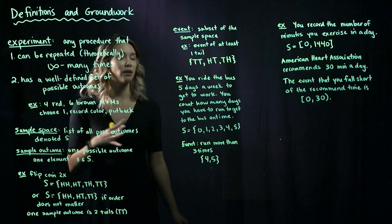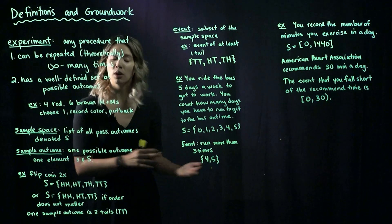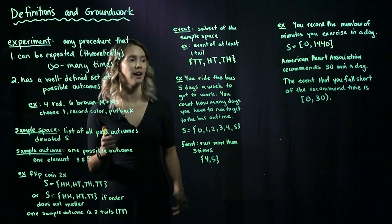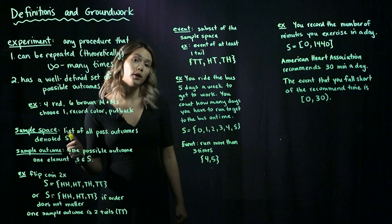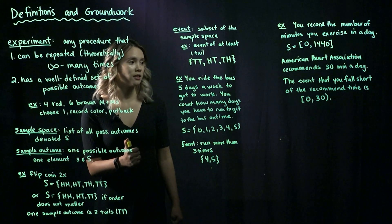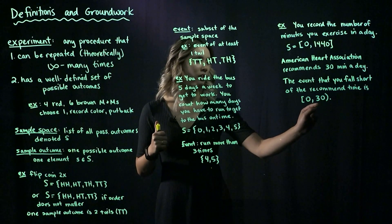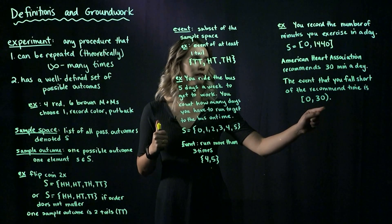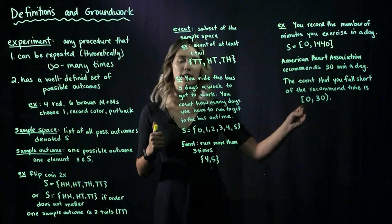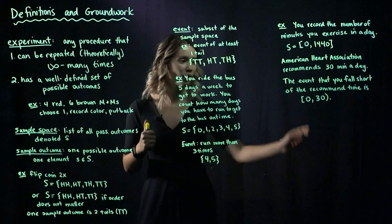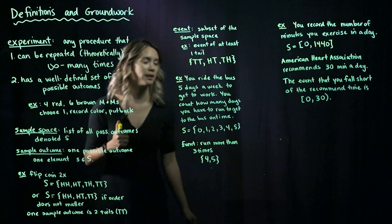So now let's think about one event. The American Heart Association recommends that you exercise 30 minutes a day. So the event that you fall short of this recommendation is the set 0 up to but not including 30. So if you're falling short, then you're exercising less than 30 minutes a day.